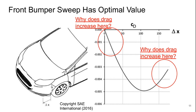The next thing we'll look at is the front bumper sweep, and it turns out this has an optimal value. We're going to define this as delta x, which is essentially how far forward the corner of the bumper is. Delta x small means it's right in front of the front wheel, and delta x large means it's tending towards a squarish front end.